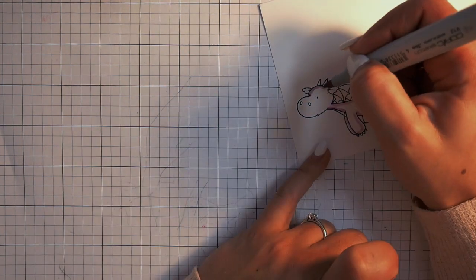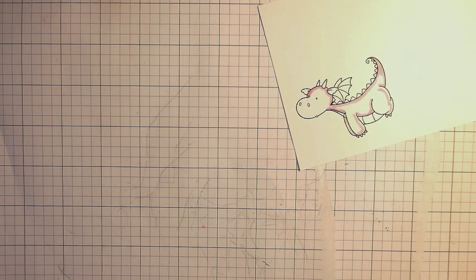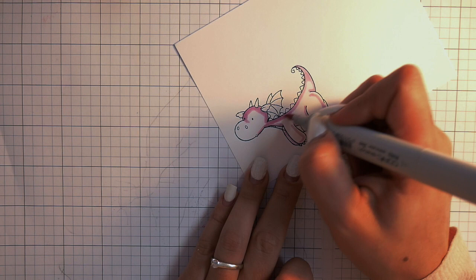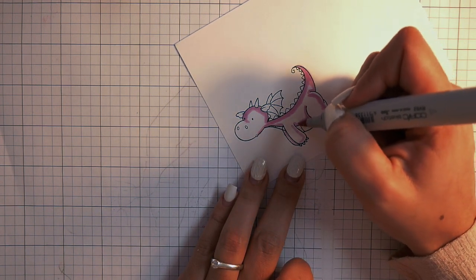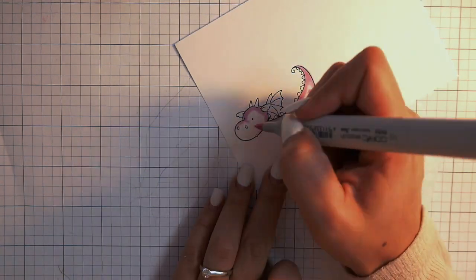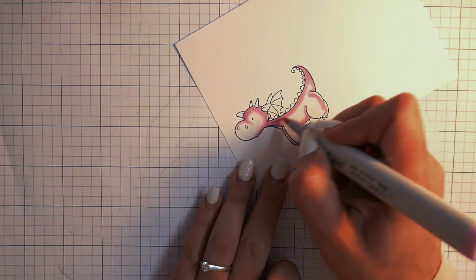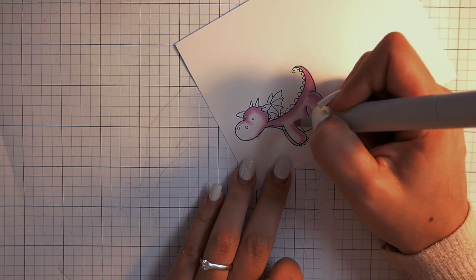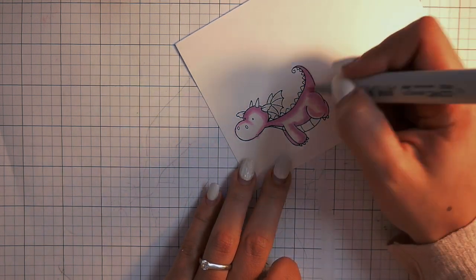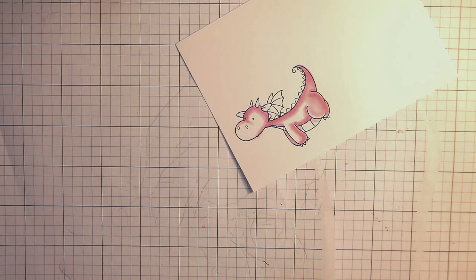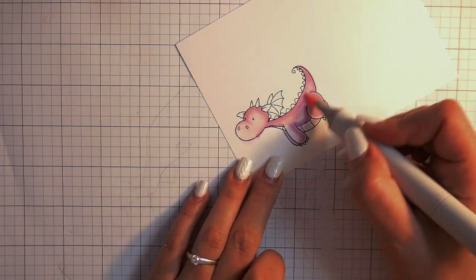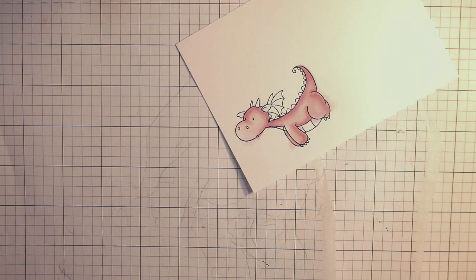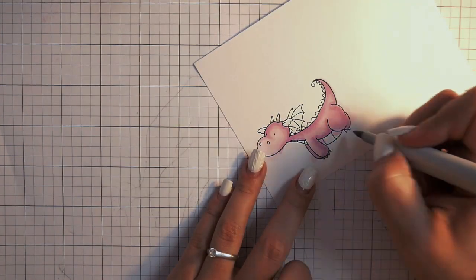I stamped it with my Memento Tuxedo Black ink and colored the little dragon with my Copic markers. I don't know why, but I wanted it to be a little bit Valentine's Day inspired but a birthday card, as I'm not the type of person who sends Valentine's cards. Here in Germany we don't do this much, so I decided to go for a birthday card as I can always use these colors.